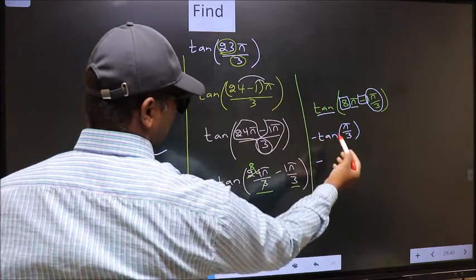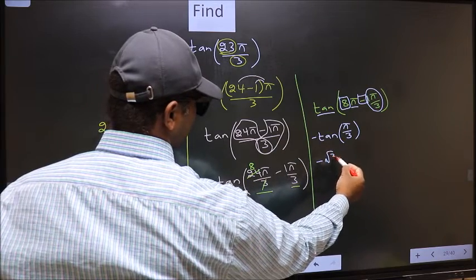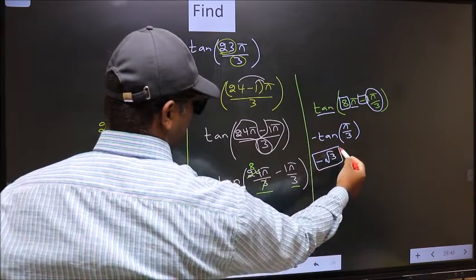So negative tan π by 3 is root 3. This is our answer.